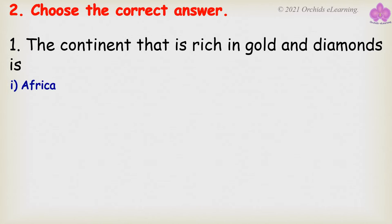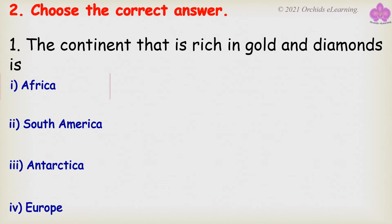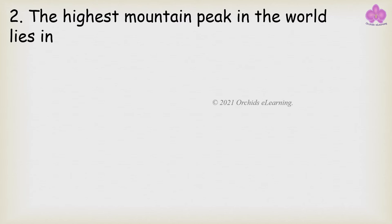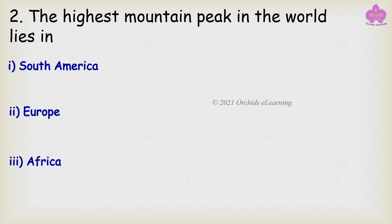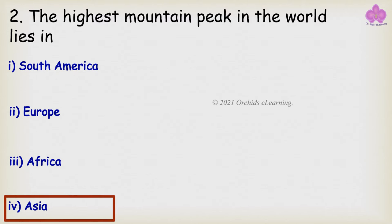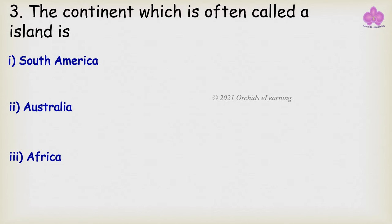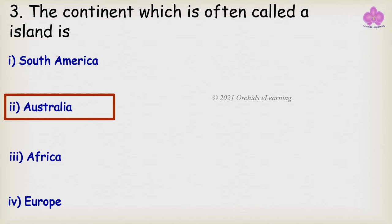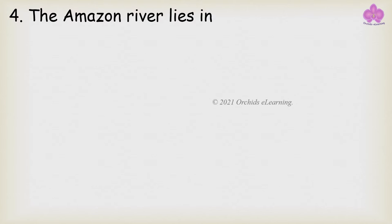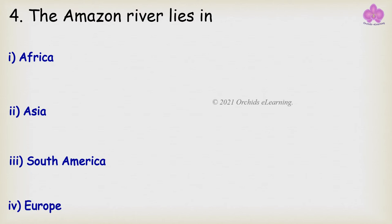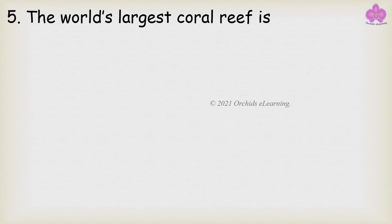The highest point in Australia is Mount Kosciuszko. Choose the correct answer: The continent that is rich in gold and diamonds is Africa. The highest mountain peak in the world lies in Asia. The continent which is often called an island is...